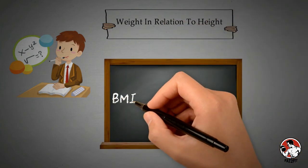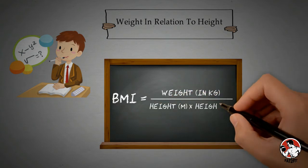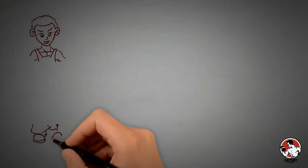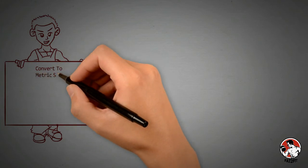The formula for BMI is weight in kilograms divided by square of height in meters. If your measurements are in pounds and feet, you would have to convert it into a metric system before using the formula.